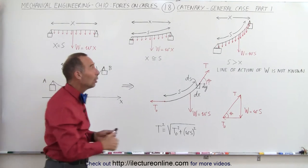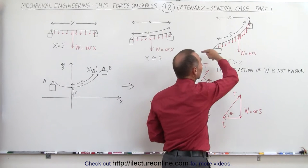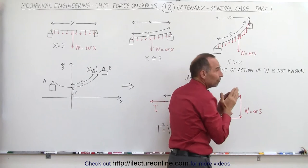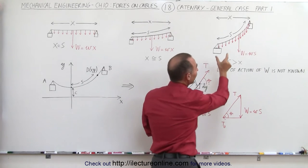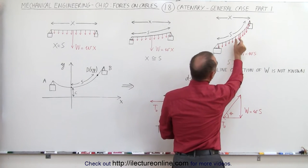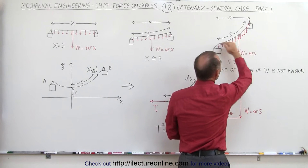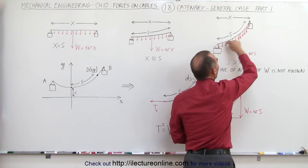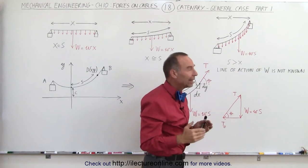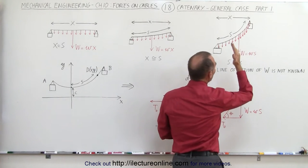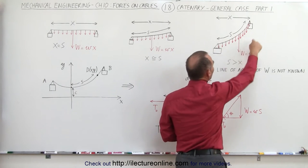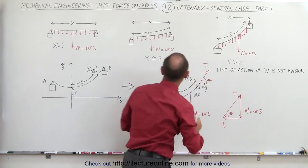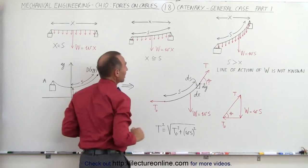The problem comes in when there's a lot of sag on the cable. Due to gravity, the forces representing the force per unit length tend to get closer and closer together in the x-direction, because what matters is the distance between points along the arc of the cable. That means the total weight — the force acting as the total weight of the whole cable — is no longer at the center.